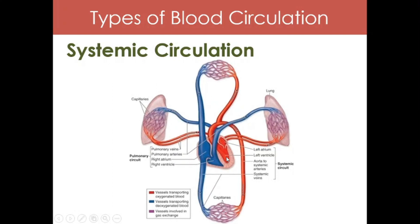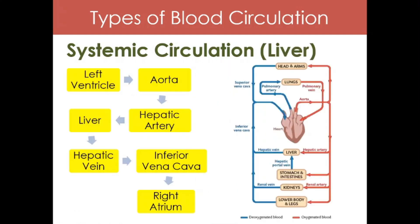Kapag naging oxygenated na yung dugo natin, it will be pumped by the left ventricle. The blood will pass through the aorta — the largest blood vessel in our body. The aorta delivers the blood towards the different arteries, going upward or downward. For example, the heart will pump blood to the liver. What blood vessels and parts will the blood pass through going to the liver and back to the heart?